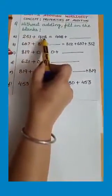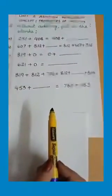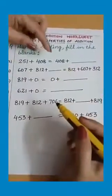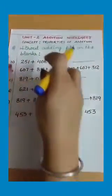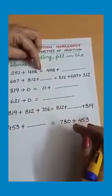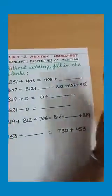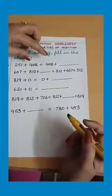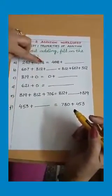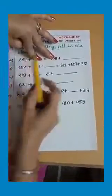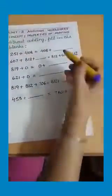First blank: 251 plus 408 equals 408 plus dash. We look at both sides of the equals sign to balance them. On the left side there is 408, and on the right side there is 408 again. The missing number is 251, so we write 251 in the blank.